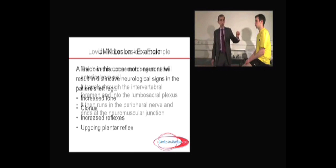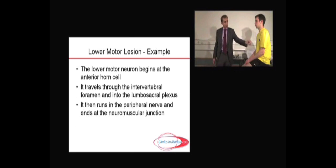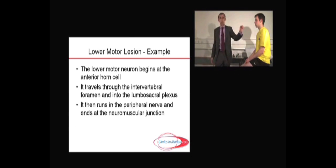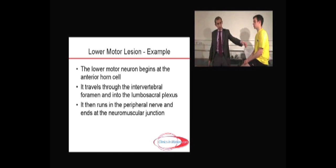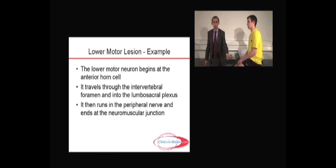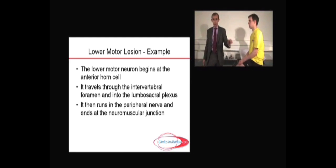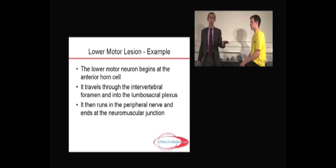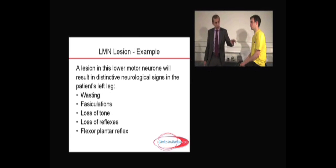If, on the other hand, he has a lower motor neuron lesion — from the anterior horn cell down to the leg — it'll be from the anterior horn cell, where it exits through the intervertebral foramen, into the lumbosacral plexus, runs in the peripheral nerve, and stops at the neuromuscular junction. Any problem along there will lead to lower motor neuron signs: wasting, fasciculations, loss of tone, loss of reflexes, and a flexor plantar.